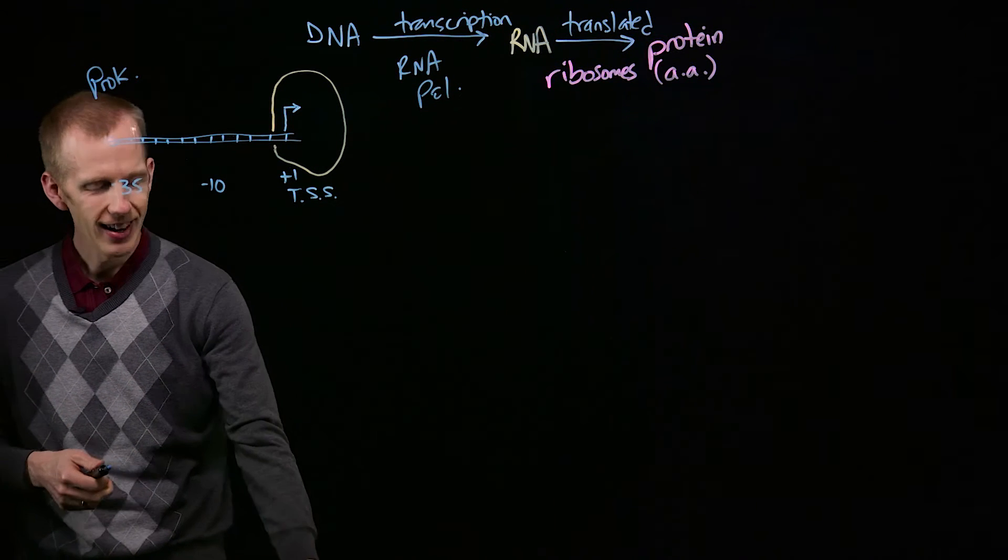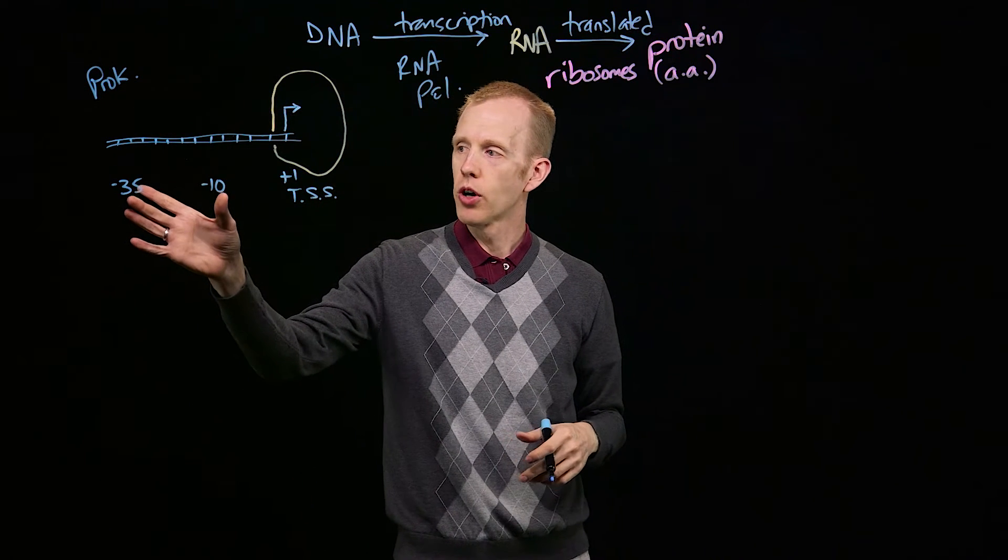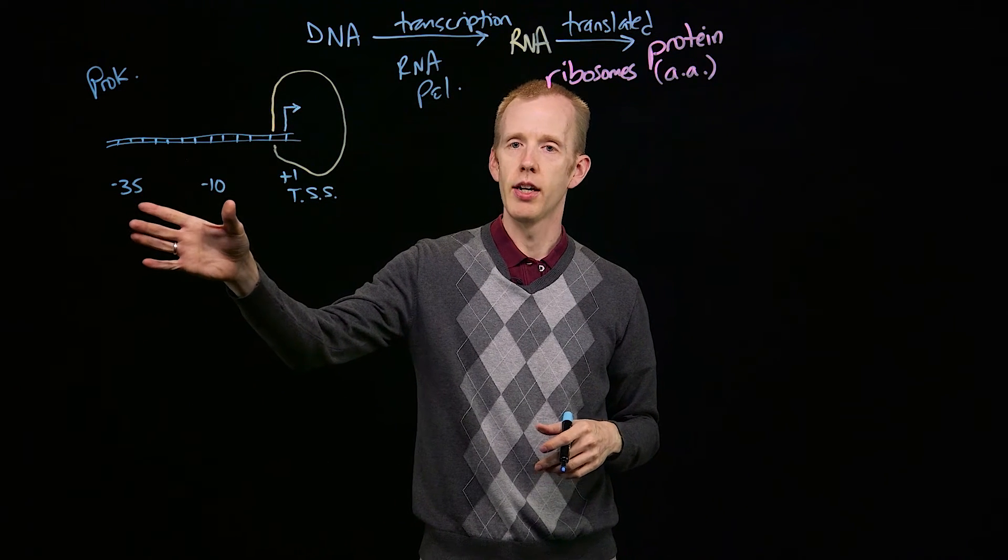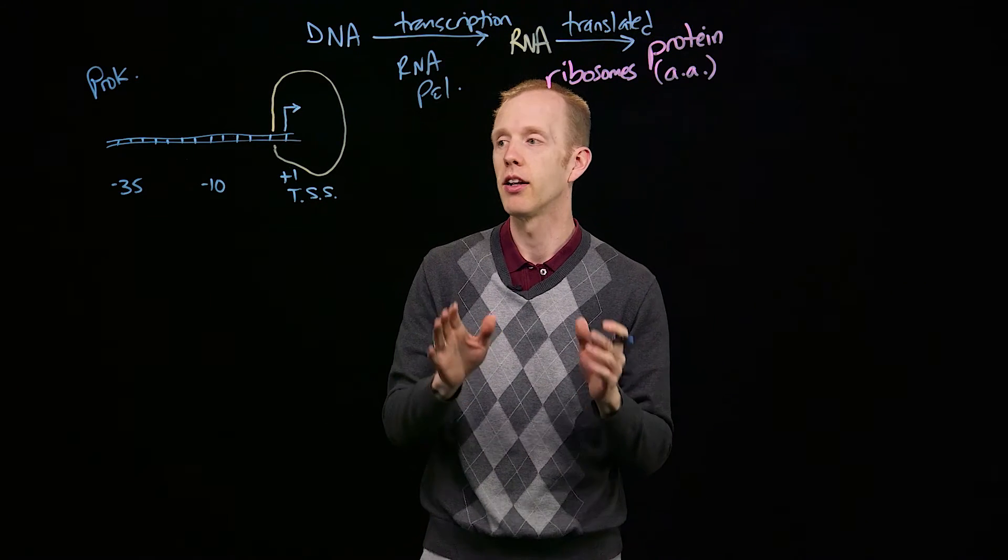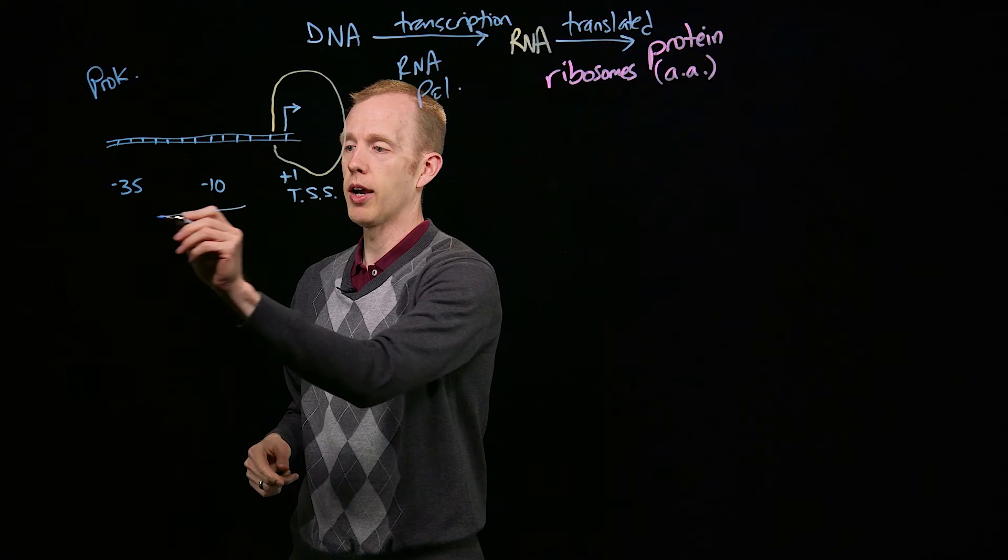But that hasn't happened yet. In a prokaryote bacterium, there are specific DNA sequences located about 35 and 10 nucleotides upstream, or to the 5' direction.